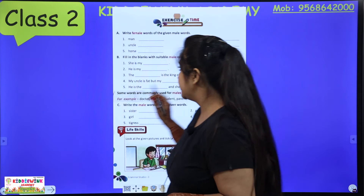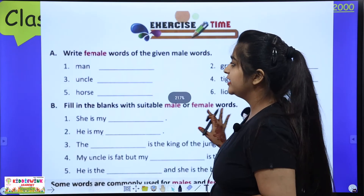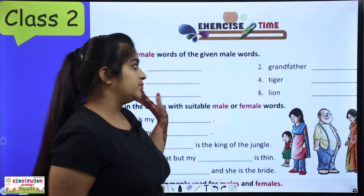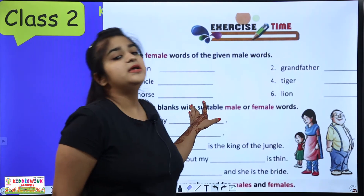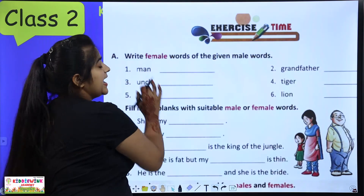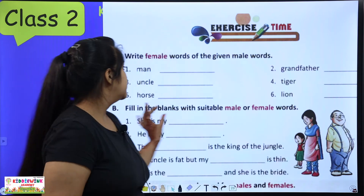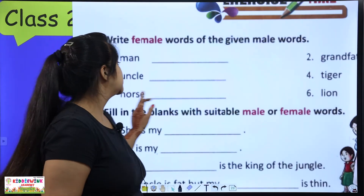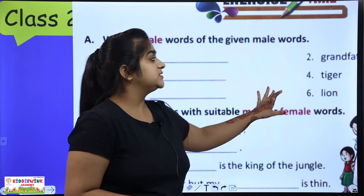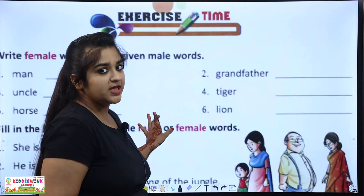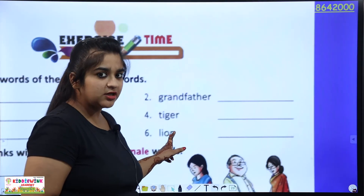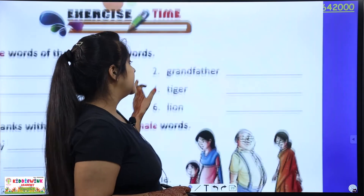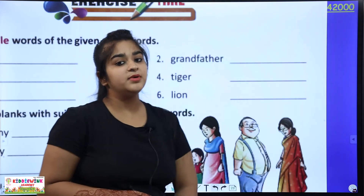Come on to the next page — the chapter is finished. Write the female words of the given male words. You have a male word — write the female word. Man — woman. Uncle — aunt. Horse — mare. Grandfather — grandmother.